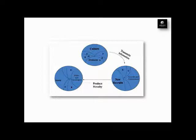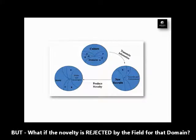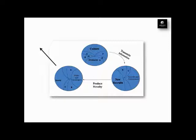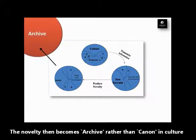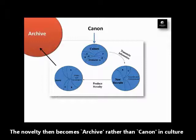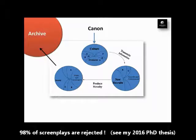But what happens if the new recruits produce a novelty — a new idea — but the field, the gatekeepers, the critics, and the audience don't like it and reject it instead of selecting it? Well, then that new idea, process, or product — say that new movie — becomes part of the archive. So you also have archive and canon in culture. The canon is all the movies that are liked, selected, and remembered — there's a lot more that becomes archive than becomes canon, or is selected to serve as inspiration for the new generation of recruits.